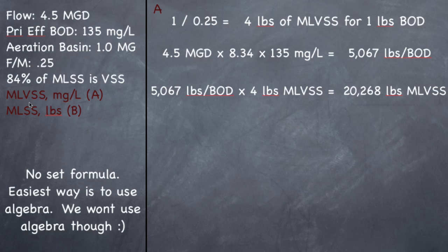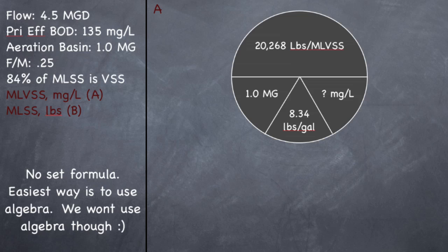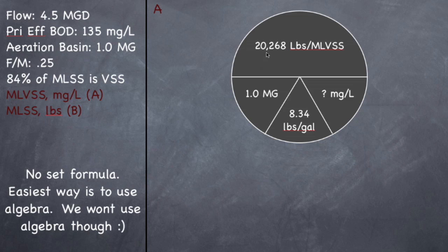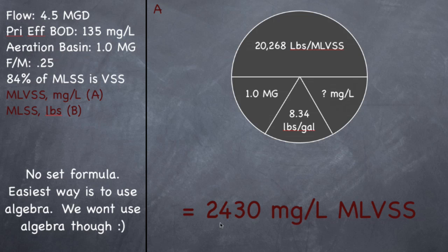When you multiply those two together, you get 20,268 pounds of MLVSS in the aeration basin. So that's great, we have pounds now, but they want it in milligrams per liter. So that's just a reverse pounds formula. So let's set up our pi. We have 20,268 pounds of MLVSS divided by 1 MG, which is the aeration basin volume, divided by 8.34. And what we're trying to find out is the concentration. When you divide those out, you should get a concentration of 2430.